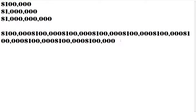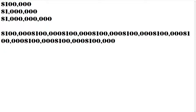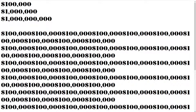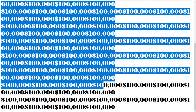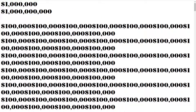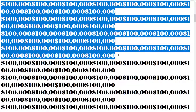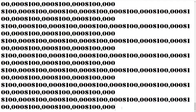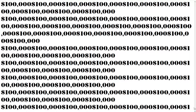Ten rows of a hundred gives us a million. Copy that, paste it ten times — that's ten million. Copy that again, paste it ten times — that's a hundred million. Copy that, paste it ten more times. And now you're looking at a billion. This is a billion dollars.